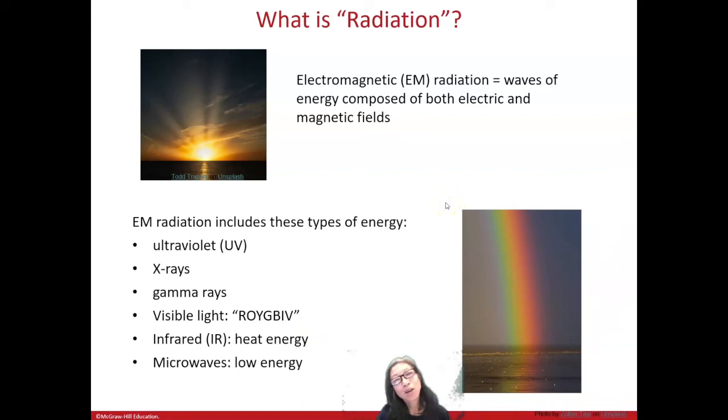ROYGBIV, standing for red, orange, yellow, green, blue, indigo, and violet. Heat energy is officially called infrared or IR. And there's also microwaves, the microwave in your house. These three, visible light, infrared, and microwave, those are all lower energy than UV.